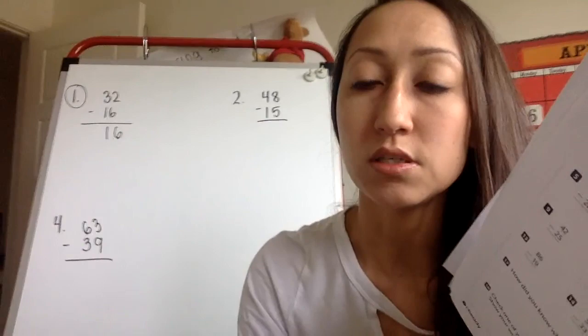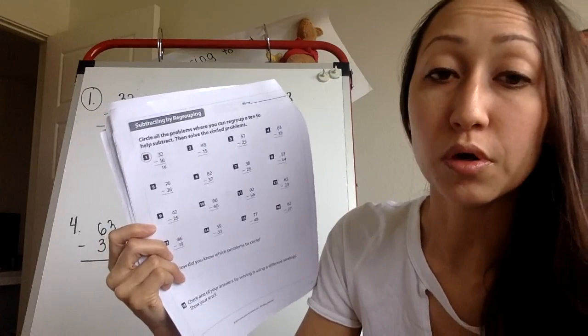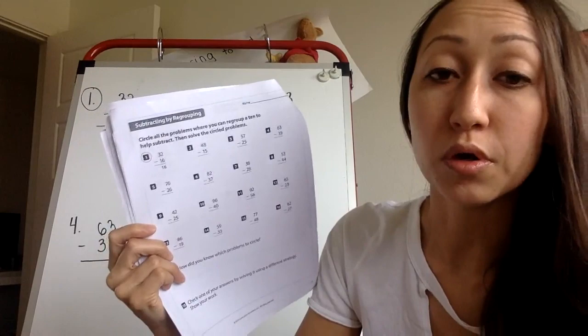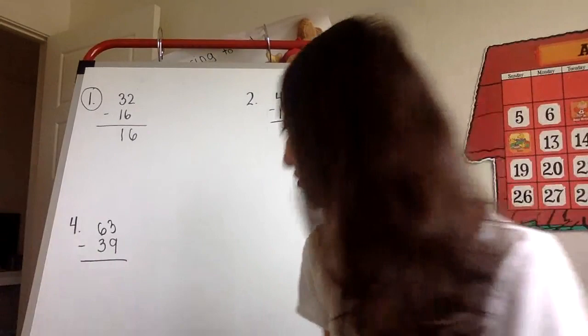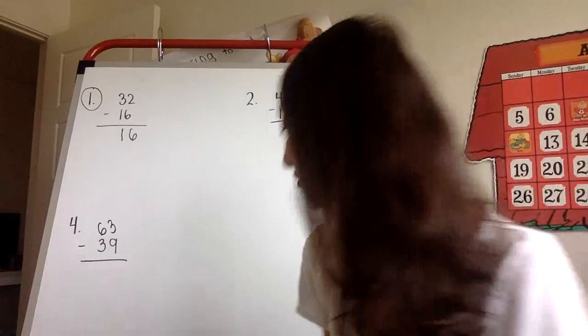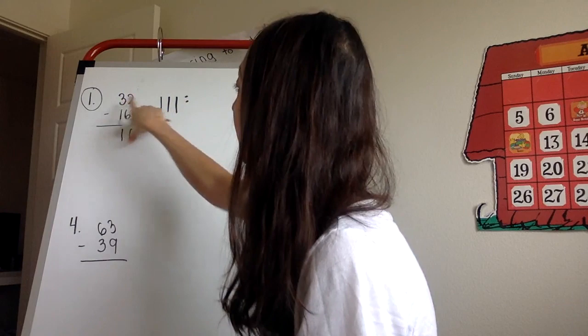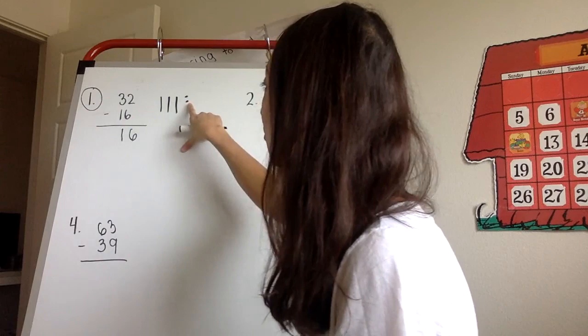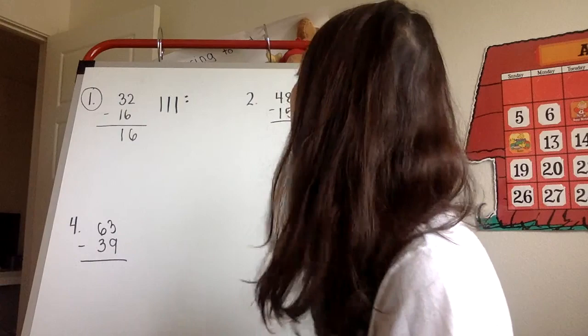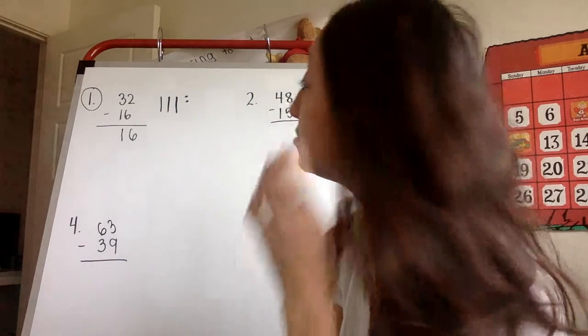So the first step in doing this worksheet, it says to circle the problems where you know you're going to have to regroup or we call it trading. So circle the problems like how number one is circled. So I have a few of the problems here I'm going to do with you today. The first one is circled because I know I'm going to have to trade. I can kind of tell right away that trading is going to be involved because if I have 32 and I need to subtract 16 from 32, I already know that I don't have enough ones. I only have two ones and I'm supposed to subtract six. There's not enough.